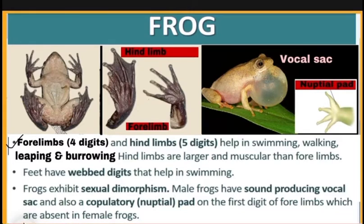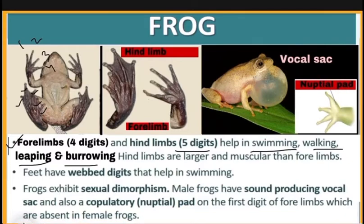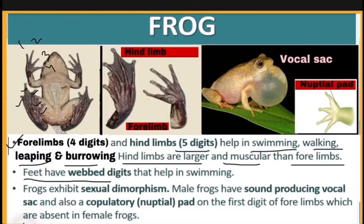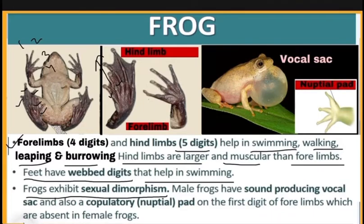Forelimbs have four digits and hind limbs have five digits. They help in swimming, walking, leaping, and burrowing. Hind limbs are larger and more muscular than forelimbs. The feet have webbed digits — skin is present between the digits — which helps in swimming.